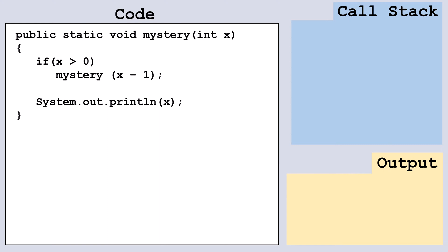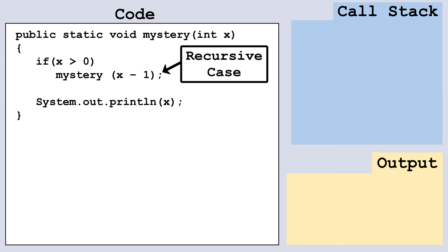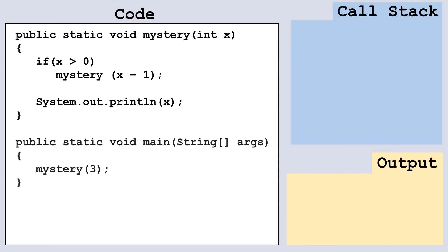Let's start with head recursion. In this snippet we have a method called mystery that takes an int input and prints the numbers from zero to the input value in ascending order. Notice that the recursive call happens at the beginning of the method before other processing. Now let's write a main method and see what happens when we call mystery with the argument three. A call stack is a LIFO structure, which stands for last in first out. Pay attention to how new stack frames are pushed onto the top of the stack.